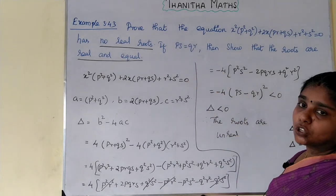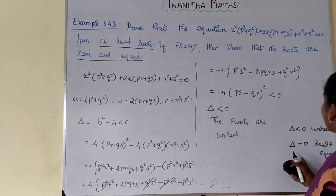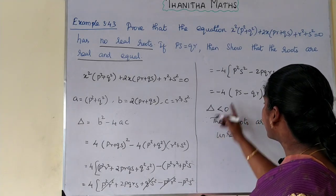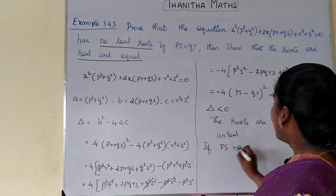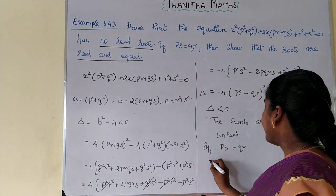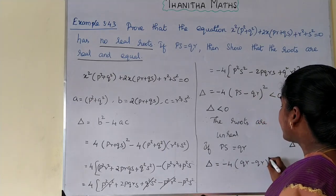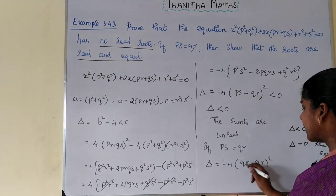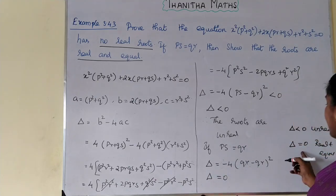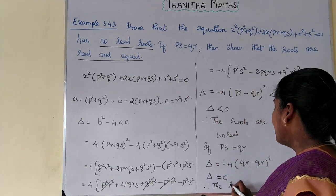For the second part, if ps = qr, we substitute into delta = -4(ps - qr)². Replacing ps with qr: delta = -4(qr - qr)² = -4 × 0² = 0. Since delta equals 0, the roots are real and equal. This is proved.